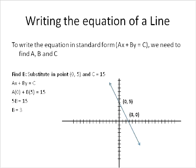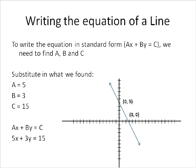And now we know the values for A, B, and C. A is equal to 5, B was equal to 3, and C was equal to 15. So we plug that information into our standard equation: 5x, because that's A, B is equal to 3, so 3y is equal to C, and C is 15.